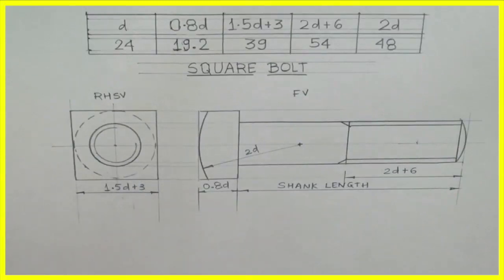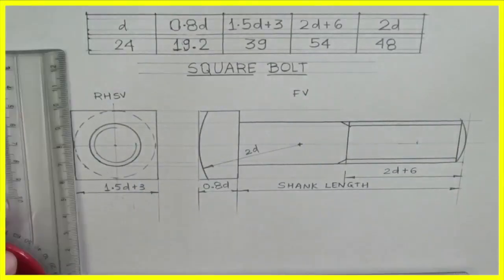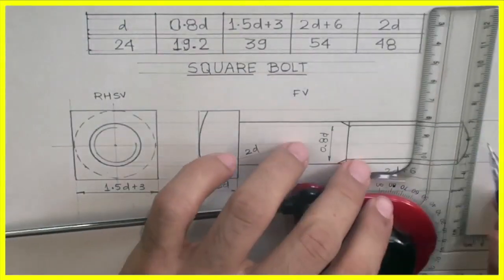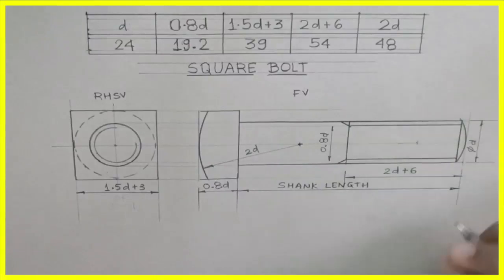So this will be dark, this will be slightly light. Remember that d will be dark. From d to d will be dark, 0.8d will be slightly lighter than d.